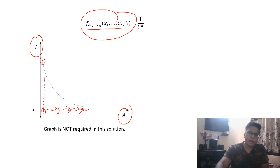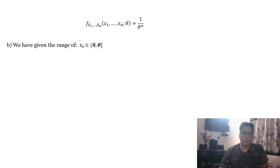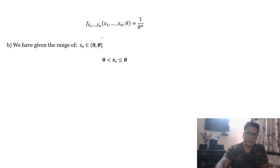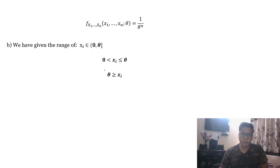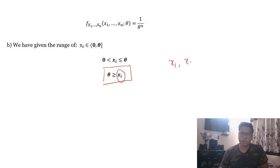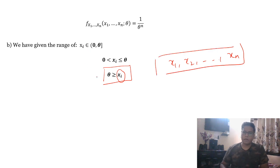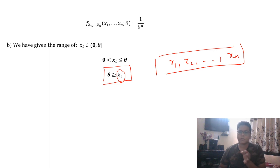We want to pick θ as minimum as possible. Now let's see what should be the range of θ. From the question, xᵢ ranges from 0 to θ. We can rewrite this as: θ has to be greater than or equal to all possible values of xᵢ, where xᵢ can be x₁, x₂, ..., xₙ. For better understanding, let me take a simple example — just for understanding, not for the exam.